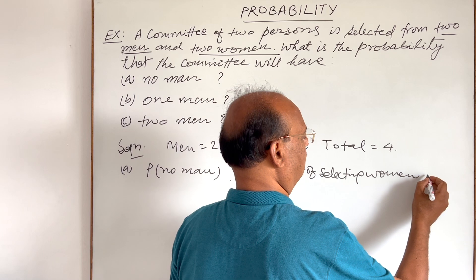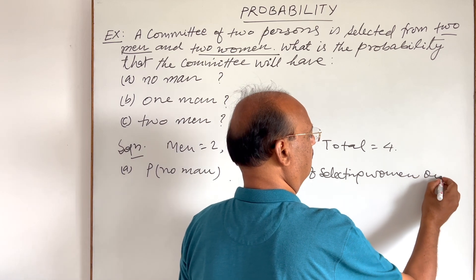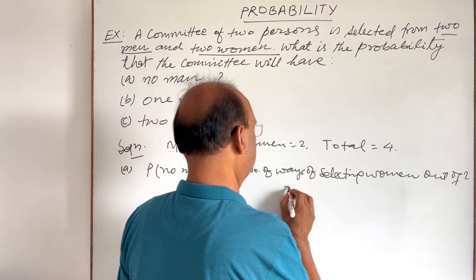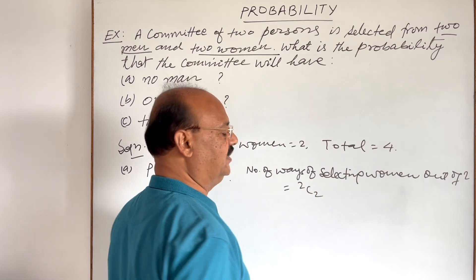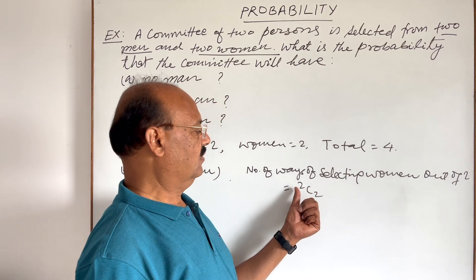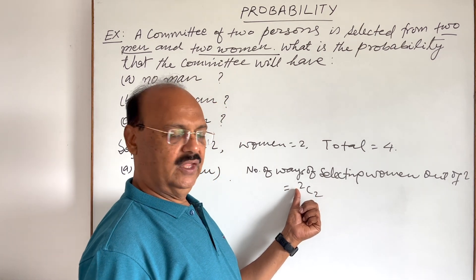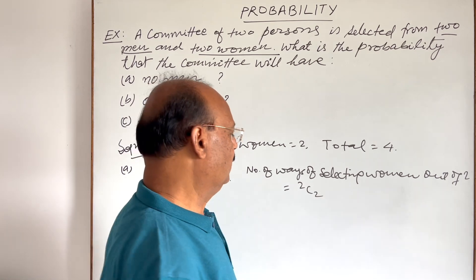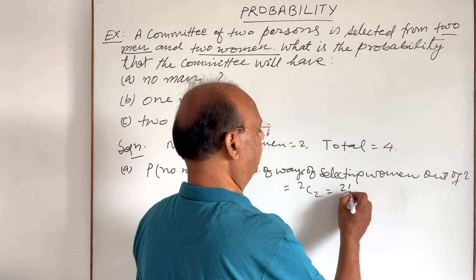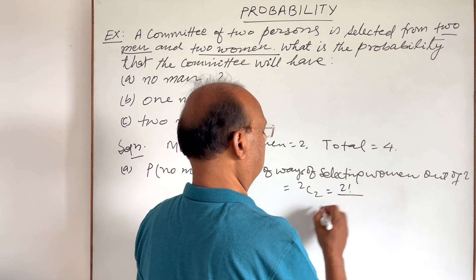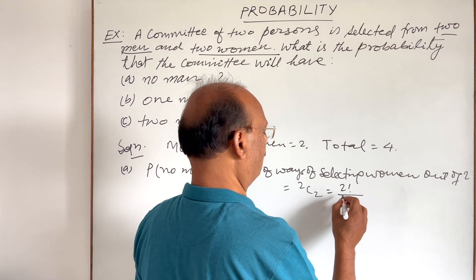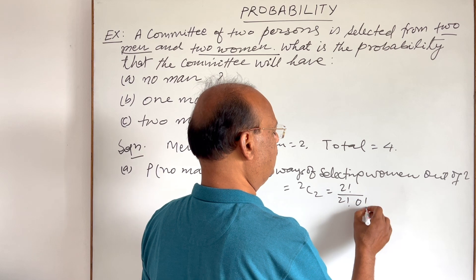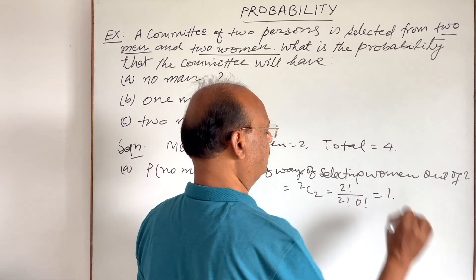The number of ways of selecting 2 women out of 2 is equal to 2C2. Total number of women is 2 and we have to select two women for this committee. This is 2 factorial by 2 factorial into 0 factorial, which is equal to 1.